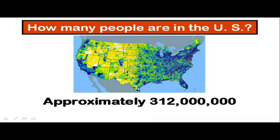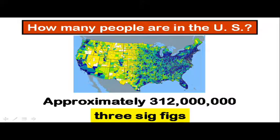In this example, we have an estimate of the number of people that are in the United States. Three hundred and twelve million people. We know that this measurement is not exact down to the last person. So how many sig figs should this number have? It has three sig figs, which means that the final six zeros in this number are not significant.